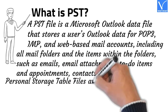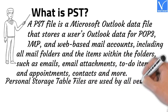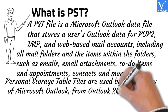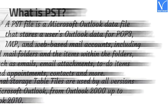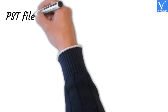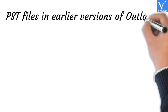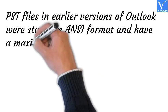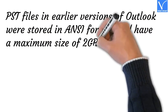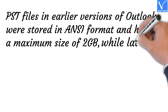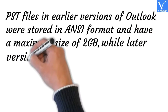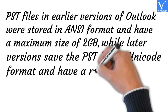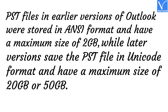Personal storage table files are used by all versions of Microsoft Outlook, from Outlook 2000 up to Outlook 2010. PST files in earlier versions of Outlook were stored in ANSI format and have a maximum size of 2GB, while later versions save the PST file in Unicode format and have a maximum size of 20GB or 50GB.